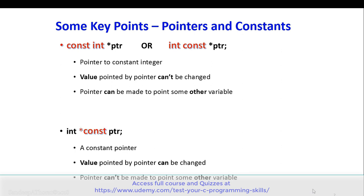The second declaration, 'int *const ptr', is a declaration of a constant pointer. In this case, the value pointed by the pointer can be changed. However, the pointer can't be made to point to some other variable.